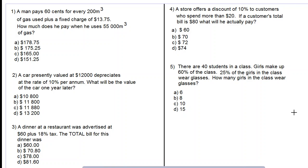Good day, let's work out these multiple choice questions. A man pays 60 cents for every 200 meter cube of gas used plus a fixed charge of $13.75. How much does he pay when he uses 55,000 meter cube of gas?